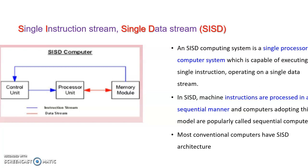An SISD computing system is a single processor computer system capable of executing a single instruction operating on a single data stream. In an SISD machine, instructions are processed in a sequential manner and computers adopting this model are popularly called sequential computers. All conventional computers have SISD architecture, corresponding to all traditional monoprocessor systems — there is only one processor that can do one job at a time.